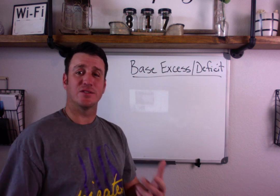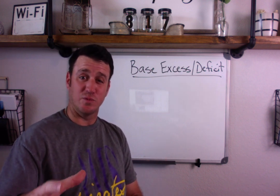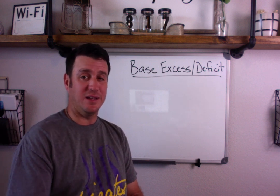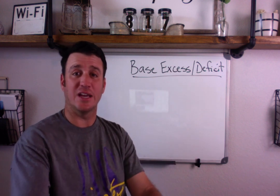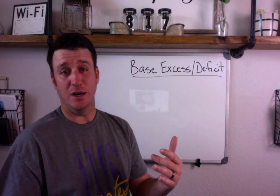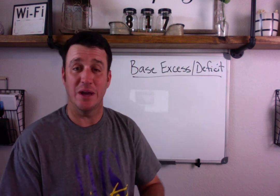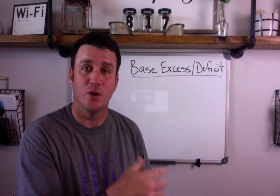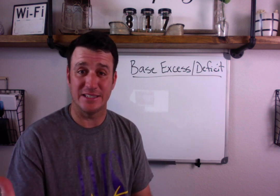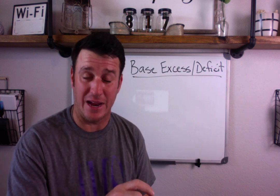The first thing you need to understand about base excess or base deficit is that it doesn't really matter how it's expressed. Your base excess can be described as a positive number or a negative number. If you have a base excess of plus 8, that tells you in regards to hydrogen ions you have an excess of base, which we know is our bicarb. The opposite would be a base excess of minus 8, which means you have a deficit or a lack of bicarb.